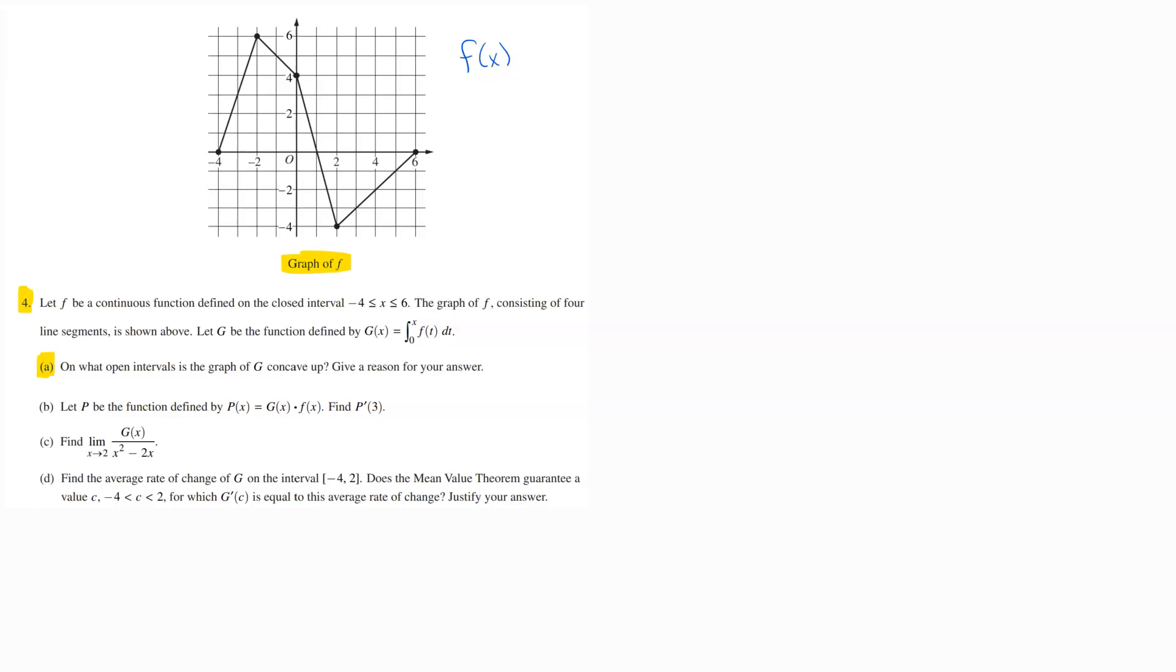Then let's go take a look at what the question is actually asking us. They want to know specifically when the graph of G is concave up. So they're talking to us about the graph of G and they want to know when it's concave up. When you see the word concavity or concave up or concave down, concavity is a second derivative game.